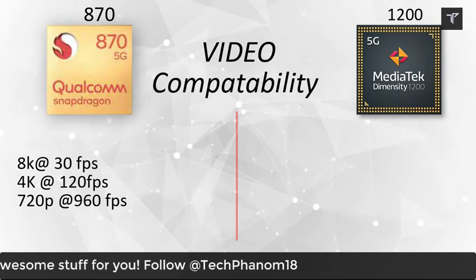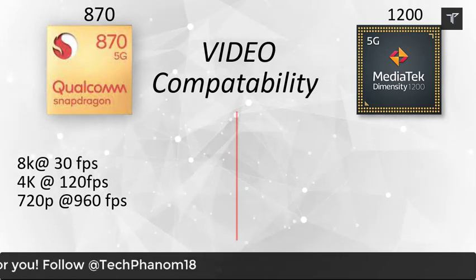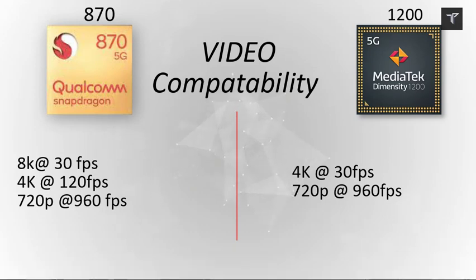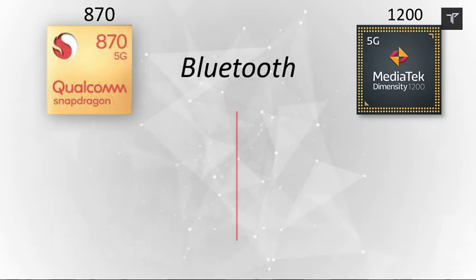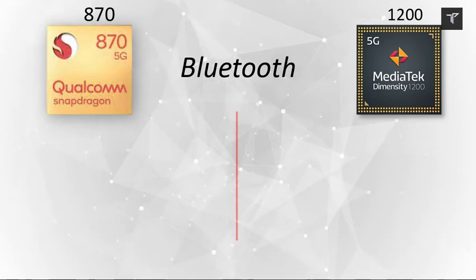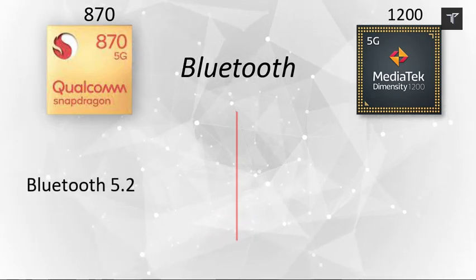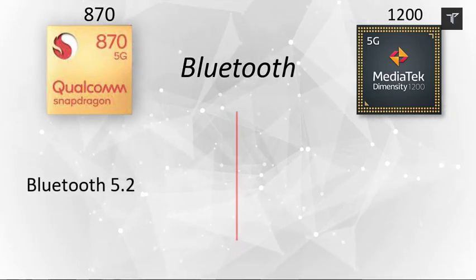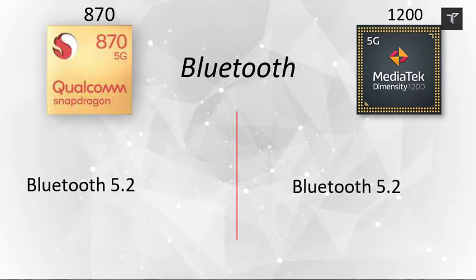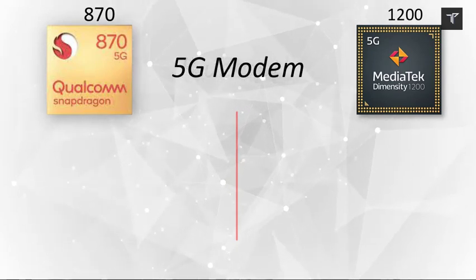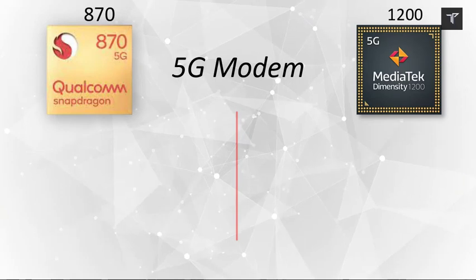For video capture, the Snapdragon 870 can record up to 8K at 30 fps and slow motion down to 720p at 960 fps, whereas the Dimensity 1200 goes up to 4K at 30 fps and 720p at 960 fps. On Bluetooth, both the Snapdragon 870 and the Dimensity 1200 support Bluetooth 5.0.